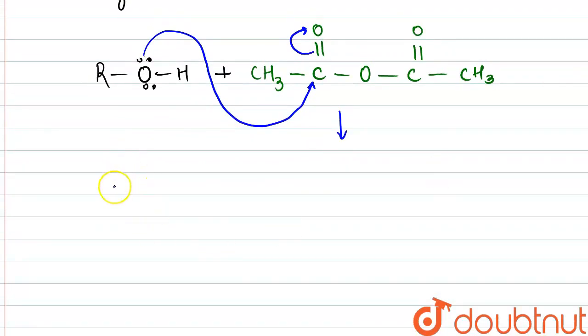So what will be formed over here? If we write it, we would be getting R-O+ this H, and then C, O negative, this methyl group remains as it is. And then O, C double bond O, CH3 unit will also be staying intact over here.